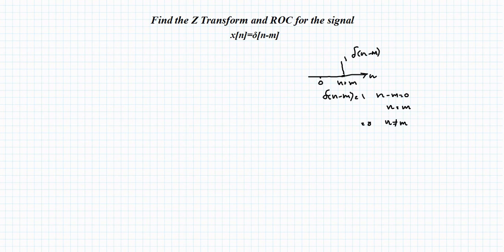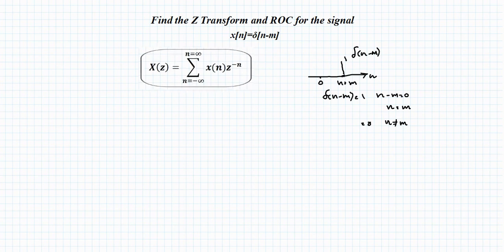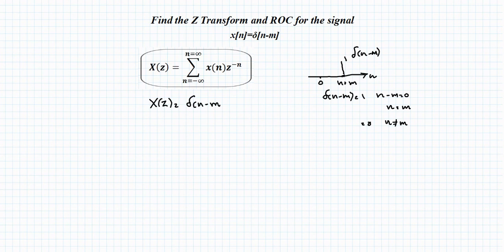To find the Z-transform of δ[n − m] we use the standard formula. The signal exists only at n = m, so we evaluate δ[n − m] · z^(−n) at n = m. Substituting n = m, δ[m − m] = 1, so we get X(z) = z^(−m).